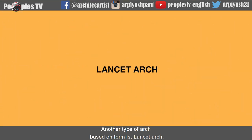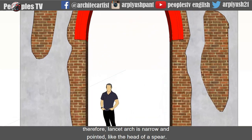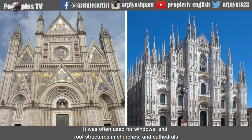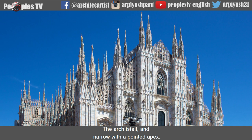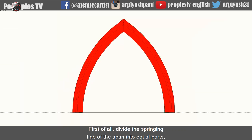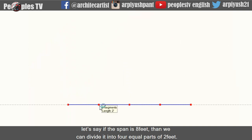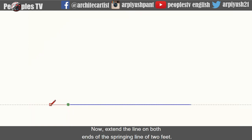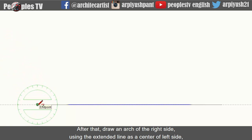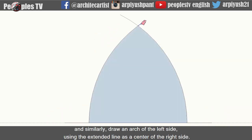Another type of arch based on form is the Lancet Arch. Lancet means a small broad two-edged surgical knife or blade with a sharp point — therefore the Lancet Arch is narrow and pointed like the head of a spear. It was developed during the Gothic period and was often used for windows and roof structures in churches and cathedrals. To construct a Lancet Arch: first, divide the springing line of the span into equal parts — for example, if the span is 8 feet, divide it into 4 equal parts of 2 feet. Then extend the line on both ends of the springing line by 2 feet. Draw an arch on the right side using the extended point on the left side as center, and similarly draw an arch on the left side using the extended point on the right side as center.